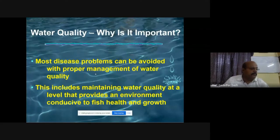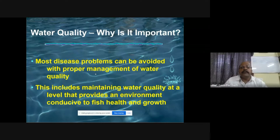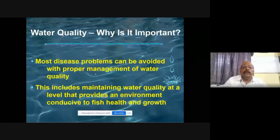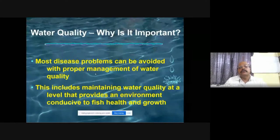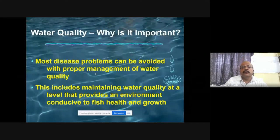Water and soil management — if you can manage these two things, you can manage several others. This includes maintaining water quality levels that provide the right environmental conditions for fish growth and health. Earlier we were getting only some kilograms from a quarter hectare of water; now it is at least 10 to 15 tons per hectare — this is because of water quality management, soil quality management, and several other management measures.